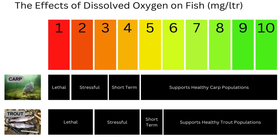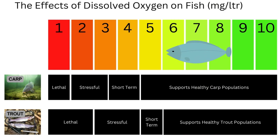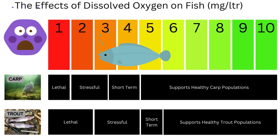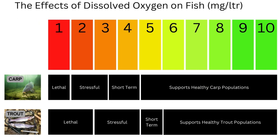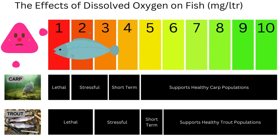Trout, for example, enjoy high concentrations of oxygen, usually in the region of 9mg per litre. They would be okay if oxygen dips below 6mg per litre for a short period, but they would become stressed if oxygen continued to plummet in the region of 3–5mg per litre. This would put them off their feed, and could lead to increased likelihood of contracting disease, or cause premature death. Anything below 3mg per litre would be lethal for trout.